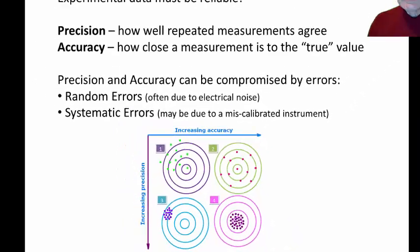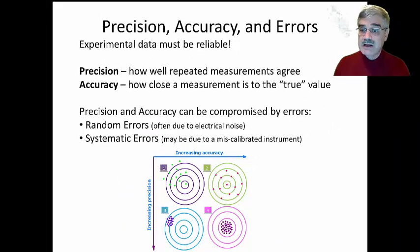Both the precision and the accuracy of experimental measurements can be compromised by errors. And the two principal types of errors are what we call random errors and systematic errors. Random errors are more things like electrical noise. Systematic errors may be due to a miscalibration of an instrument and are actually easier to handle.